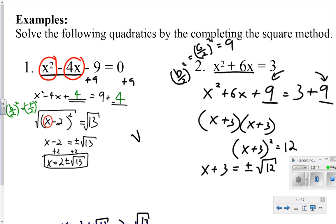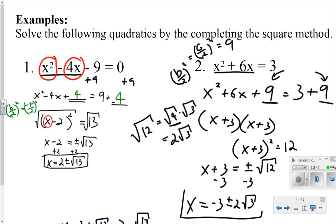Square root of 12 can be simplified to square root of 4 times the square root of 3. I'm identifying a perfect square. Square root of 4 is 2. Square root of 3. So then as I subtract 3 over here, subtract 3 over here, my final answer is x equals negative 3 plus or minus 2 square roots of 3. And that's my final answer.